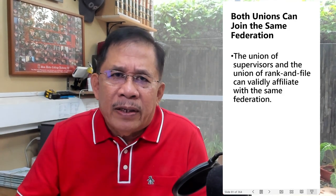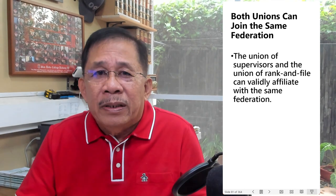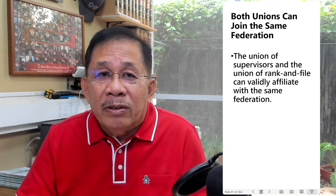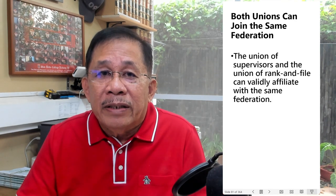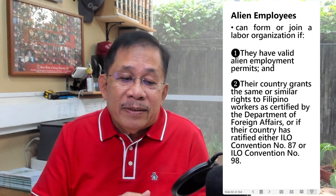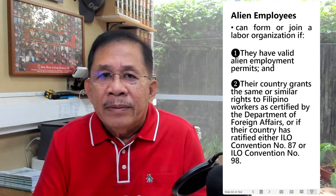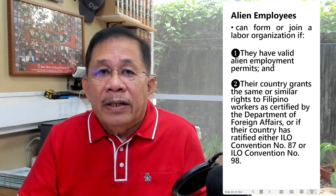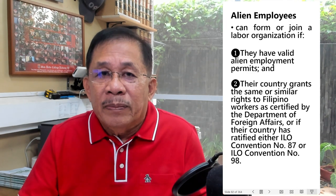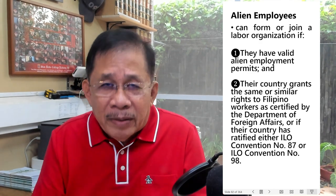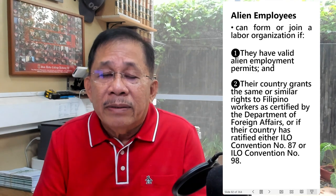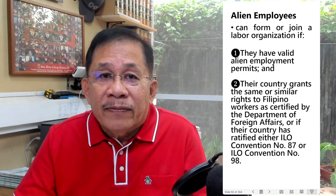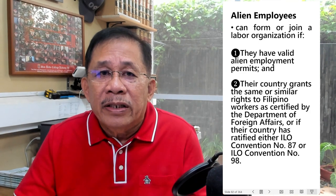Even though supervisors and rank-and-file in the same establishment cannot form a single union, the union of supervisors and the union of rank-and-file can validly affiliate with the same federation. As for alien employees, they can join a labor organization if they have a valid employment permit and their country grants the same rights to Filipino workers. Aliens who are not employees cannot organize or assist in organizing a union, as Article 284 of the Labor Code prohibits them from engaging in all forms of trade union activities.